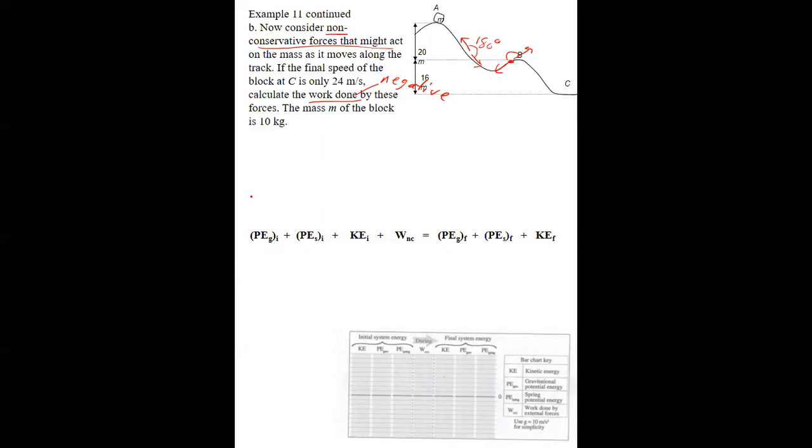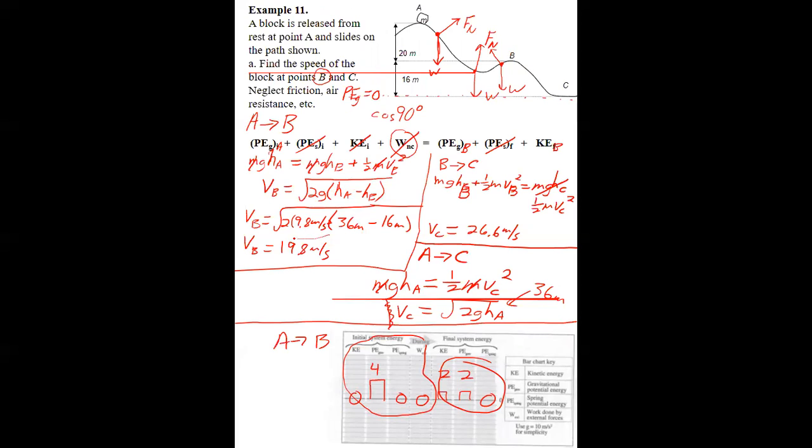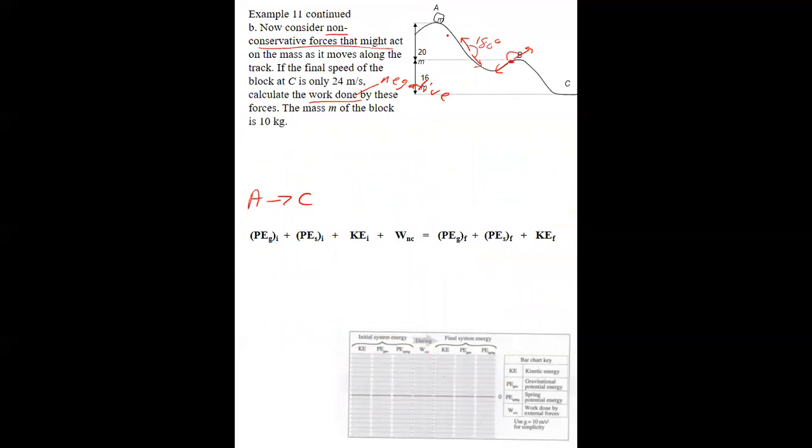So we will analyze from A to C. That is important to realize that we do want to analyze from A to C. Sometimes people will go and they'll use this value of 19.8 if they calculate it. But that would not be a good value to use because the object only gets to be going 19.8 meters per second at point B if there's no friction and air resistance from A to B. So we don't want to use that. So we'll look all the way from A to C. It has some gravitational potential energy, no spring energy. It started from rest. Yes, we have work by non-conservative forces. By the time it gets to point C, we'll say that the gravitational potential energy is zero at that line. So that's zero, no spring, and it has some kinetic energy.